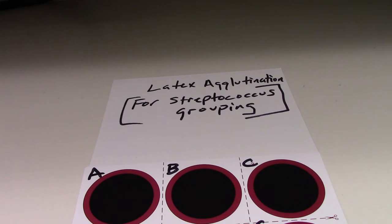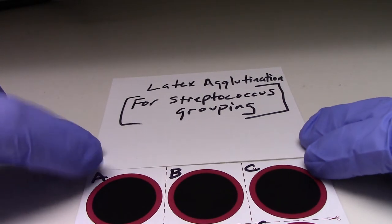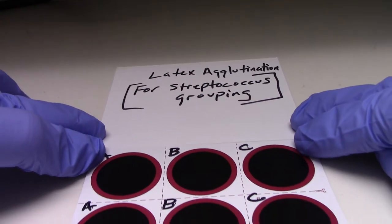Strep B, a lot of times I tell students B is for babies. That's something that you'll have to include on your report on why it's important to find group B in babies.